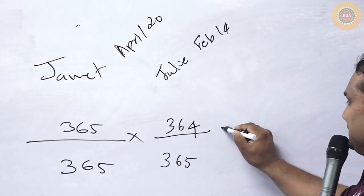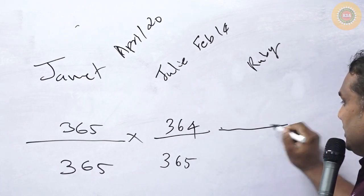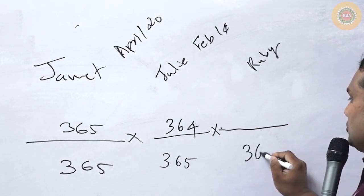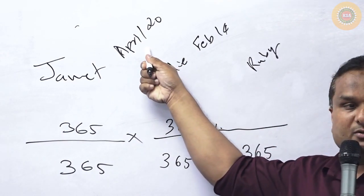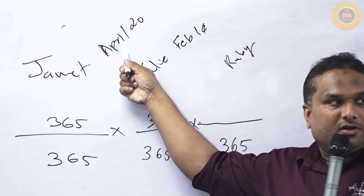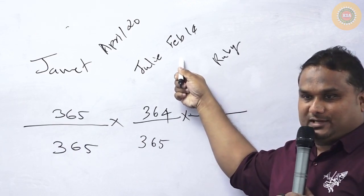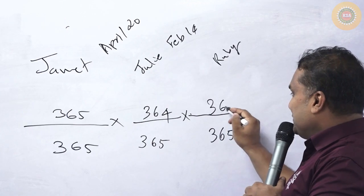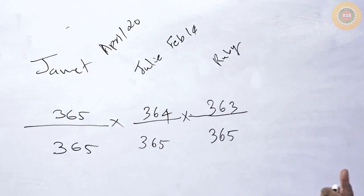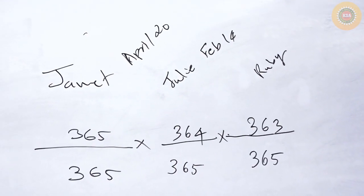The third person is Ruby. Ruby's birthday, out of the 365 days, should not be on April 20th and should not be on February 14th. So how many possibilities? 363 possibilities. Comfortable?